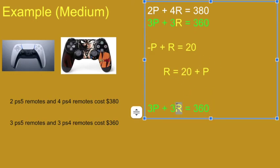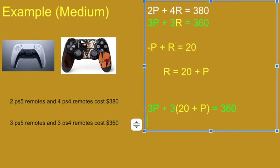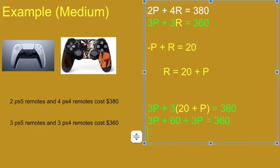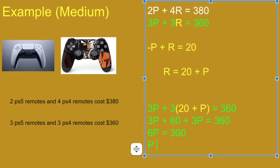Instead of writing R, I'll write 20 plus P. Bang, solve. 3Ps plus 60 plus 3 more Ps equals 360. 6Ps equals 300. P equals 50.